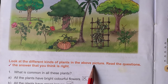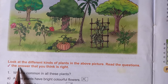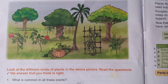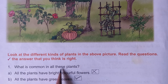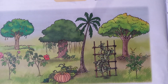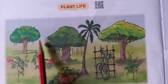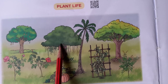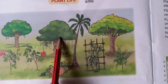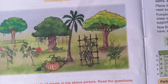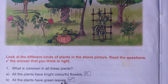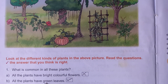Look at the different kinds of plants in the above picture. Read the question and take the answer that you think is right. We will read and put right or wrong. What is common in all these plants? The first sentence is: all plants have bright colorful flowers. Colorful flowers are for shrubs, but for trees you have fruit - so trees don't have flowers. The second one is: all plants have green leaves. Mango tree, banyan tree, coconut tree all have green leaves. So all trees, even shrubs, herbs, creepers, and climbers have leaves - so you have to put right for this.